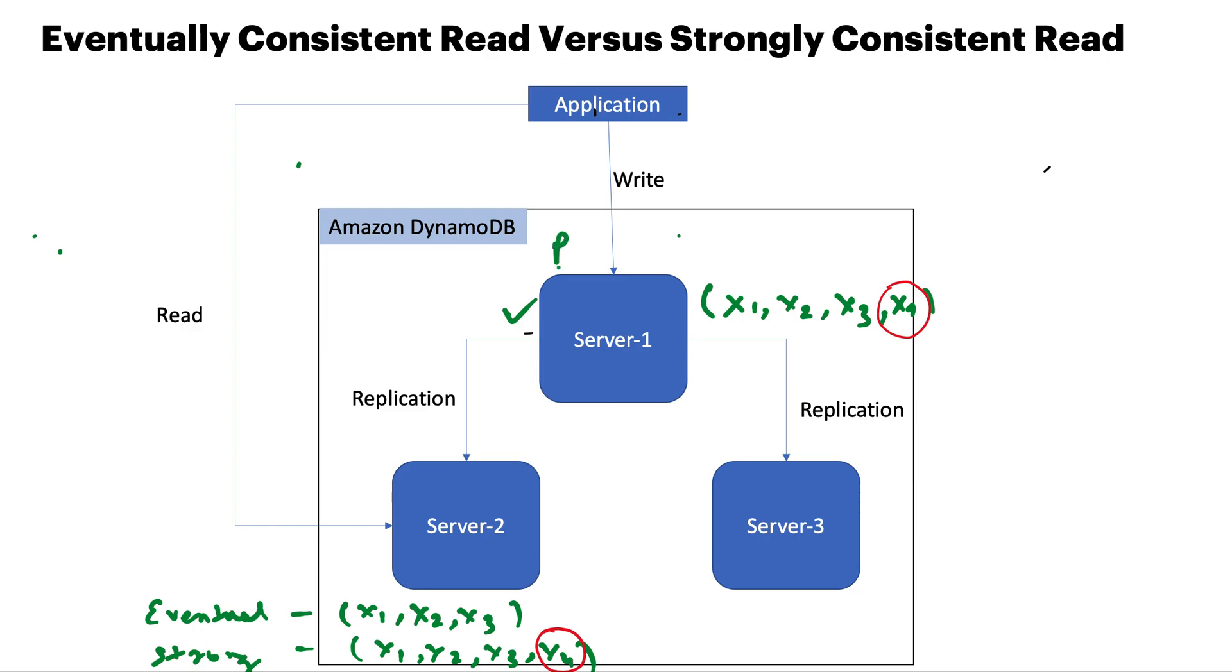and these are the secondary nodes, S1 and S2. Usually when data is written to the primary node, it has to be replicated to S1 and replicated to S2. For example, if my application writes the data x1, x2, x3, where x4 is the new data, ideally it has to be